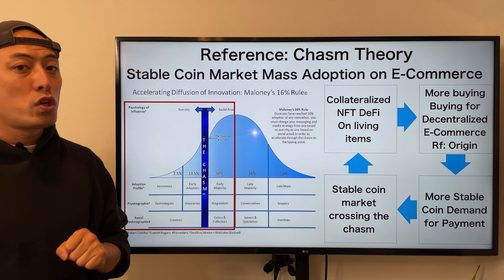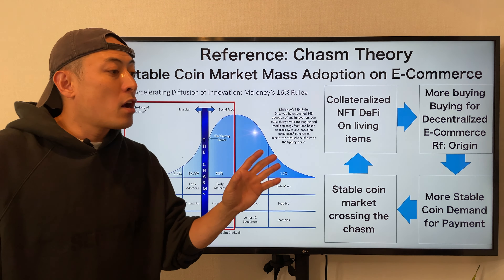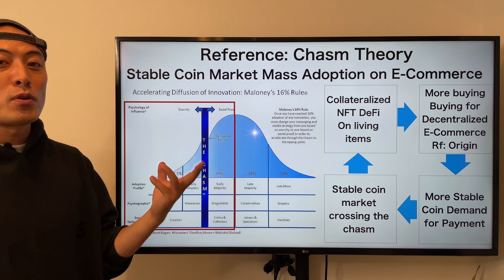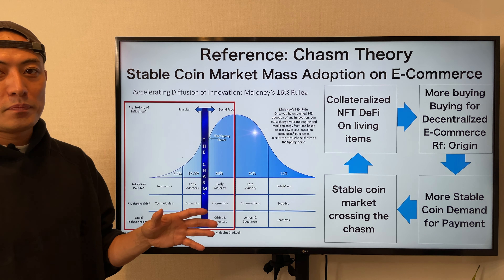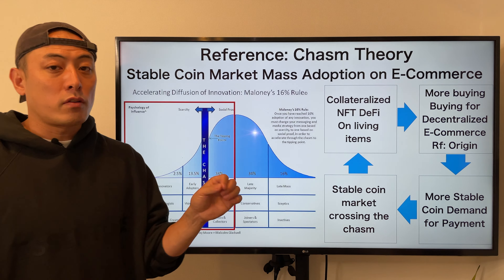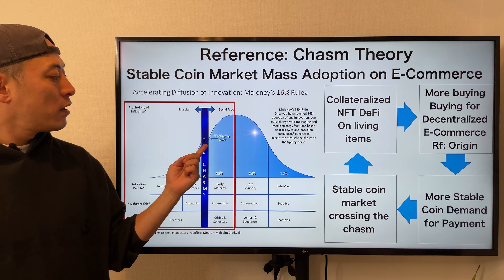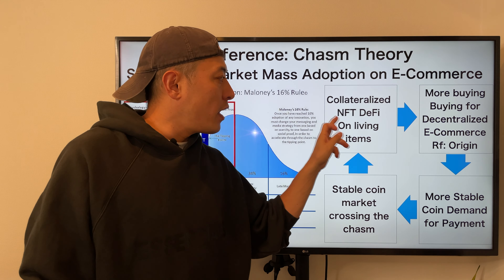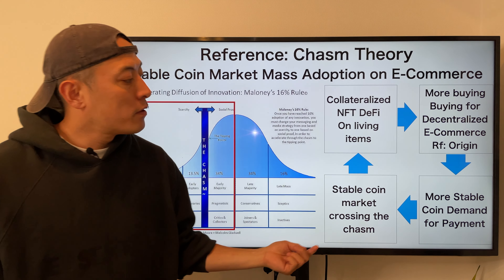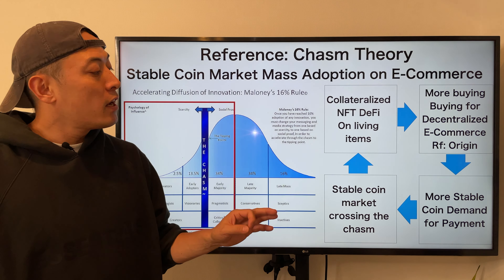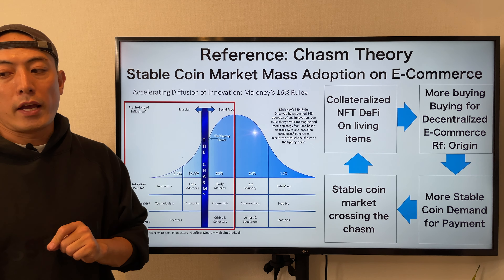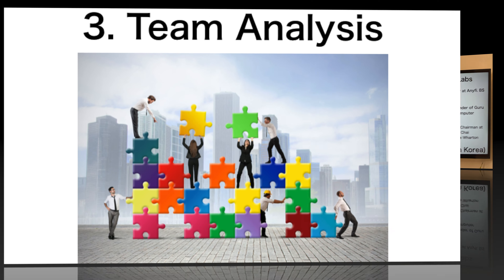That is the mass adoption scenario for stable coins. From this perspective, Luna's product strategy for mass adoption is a little questionable. To understand stable coin mass adoption better, here is the Chasm Theory — the most well-established tech marketing theory for mass adoption — with five stages: Innovator, Early Adopter, Chasm, Early Majority, Late Majority, and Laggard. For stable coin e-commerce adoption, NFT game vouchers and virtual goods target innovators and early adopters only. Early majority have no interest in virtual goods. But once NFT tokenization applies to iPhones, cars, and housing, they start using it — tokenized NFT DeFi on living items brings buying power to decentralized e-commerce, more stable coin demand for payments, and that is how stable coin crosses the chasm.